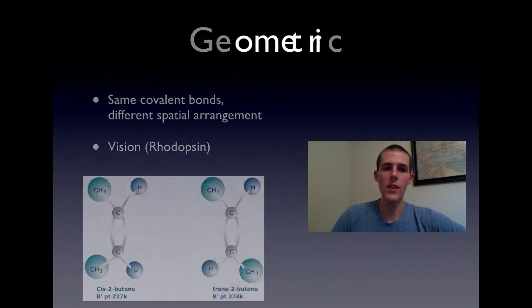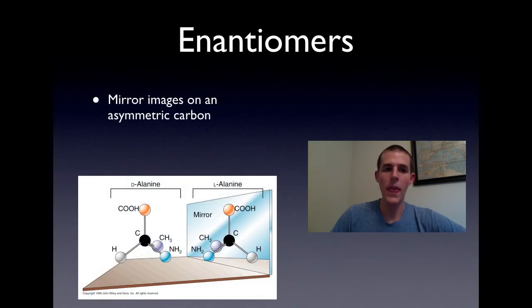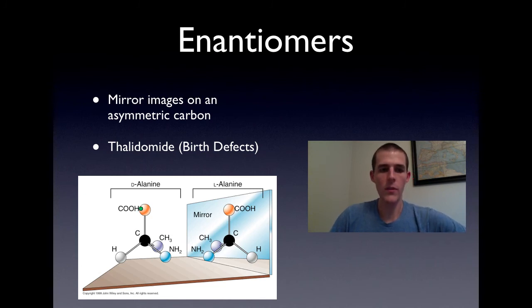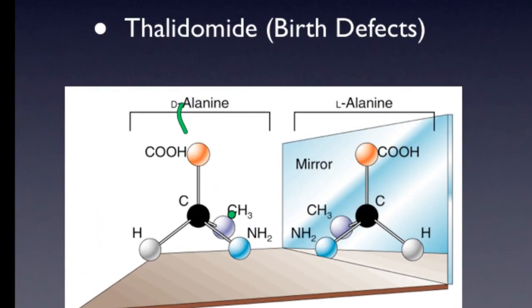Our last isomer of the day is the enantiomer. Enantiomers are mirror images on an asymmetrical carbon. Let's talk about this word, asymmetrical. An asymmetrical carbon is a carbon that has got four different atoms bonded to it. If you look at this carbon right here, none of its four bonds are the same. Each one has something different hanging off of it. You can think of these guys as being mirror images. Right here, they're showing you a mirror. This guy is a mirror of that one. This one is mirrored to that one. And this one is mirrored to that one.